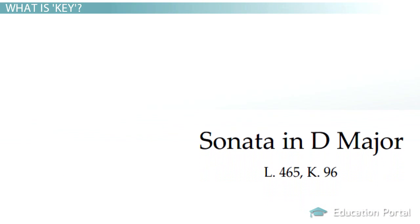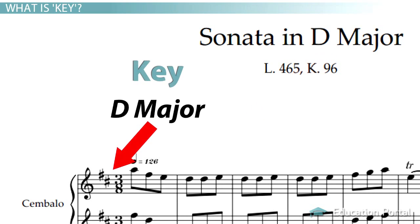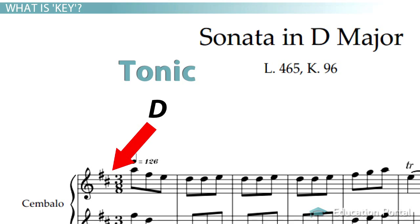So when you see a piece of music where the title indicates D major, you can assume that the key is D major, the tonic is D, and the notes of the song will revolve around tension and release of the note D.